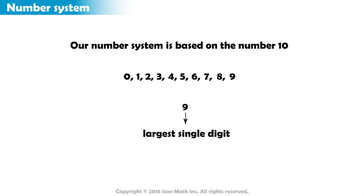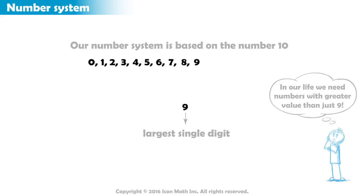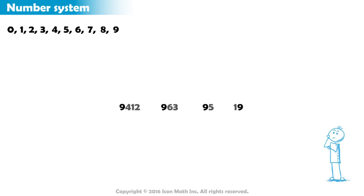9 is the largest single digit in our number system. But in our life, we need numbers with a greater value than just 9. So, we put more digits together to form larger numbers.